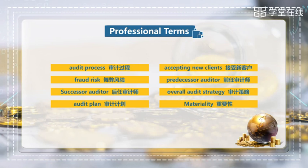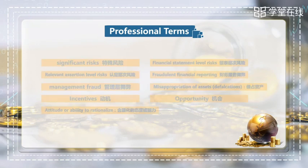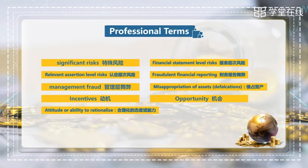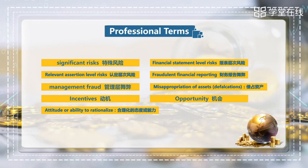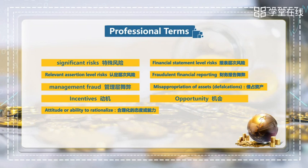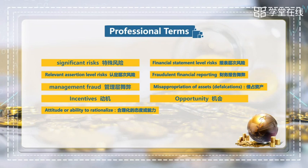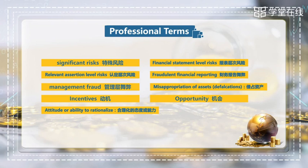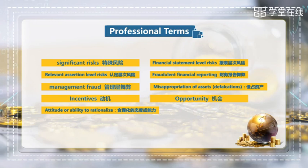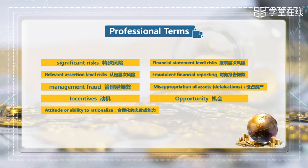Materiality — 重要性. Significant risk — 特殊风险. Financial statement level risks — 报表层次风险. Relevant assertion level risk — 认定层次风险. Fraudulent financial reporting — 财务报告舞弊. Management fraud — 管理层舞弊. Misappropriation of assets — 侵占资产. Incentives — 动机. Opportunity — 机会. Attitude or ability to rationalize — 合理化的态度或能力.